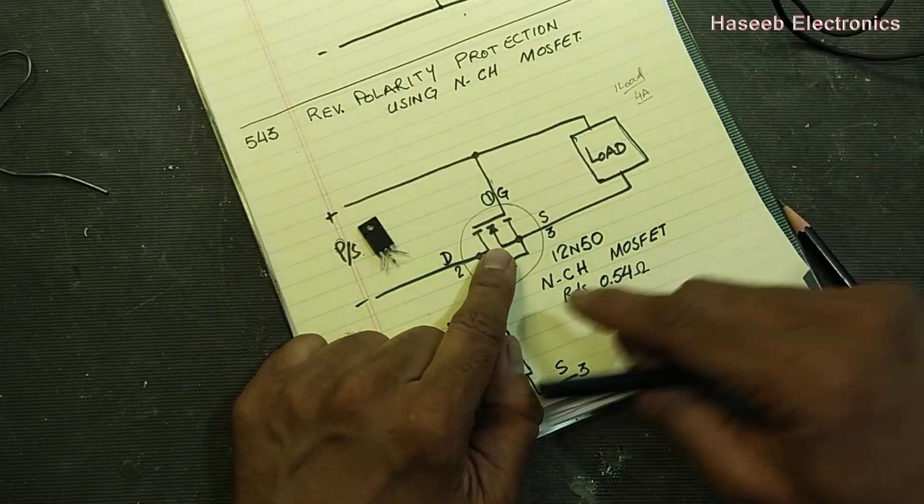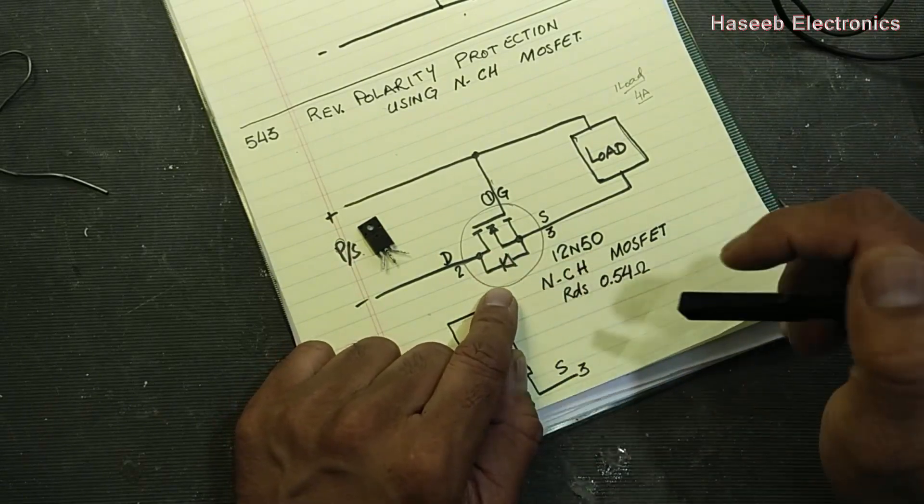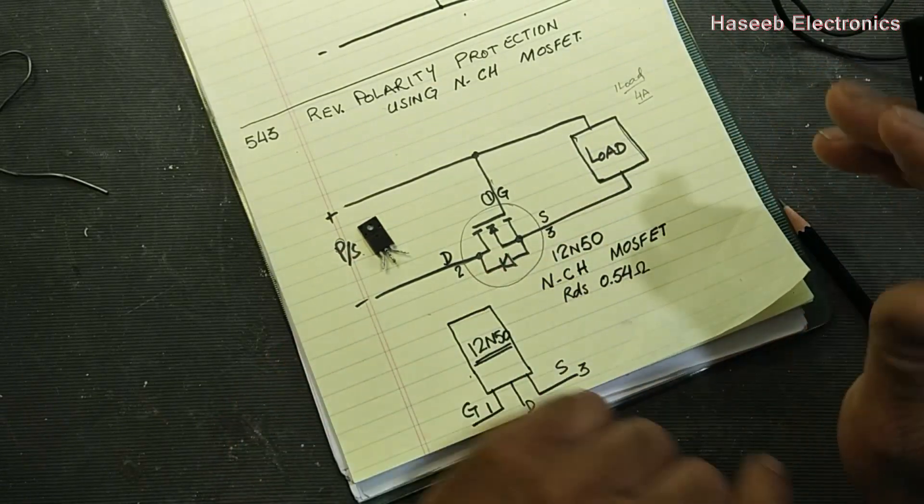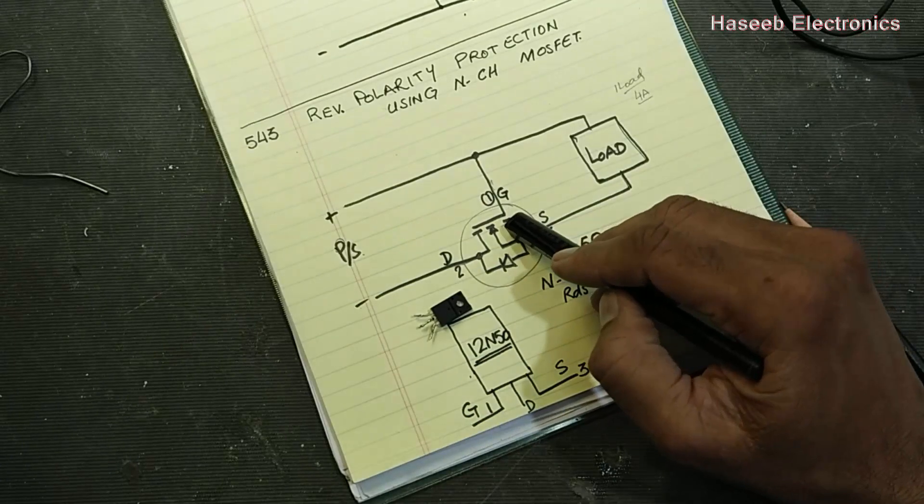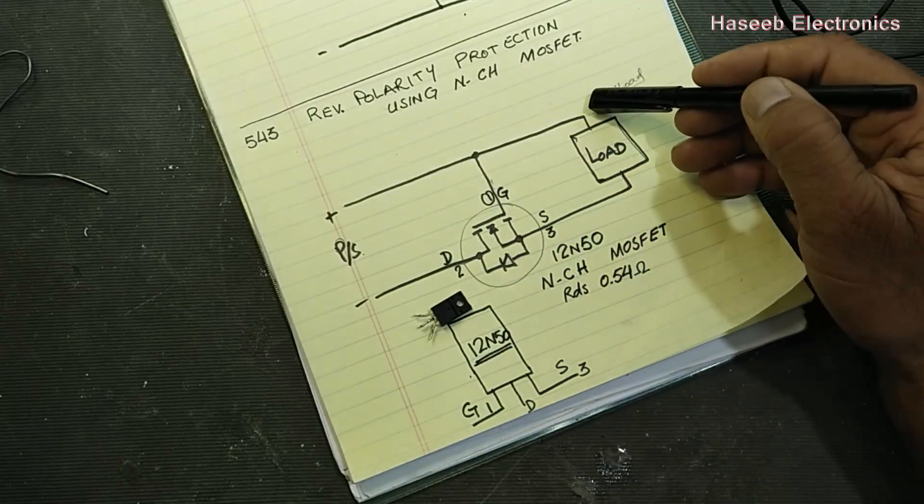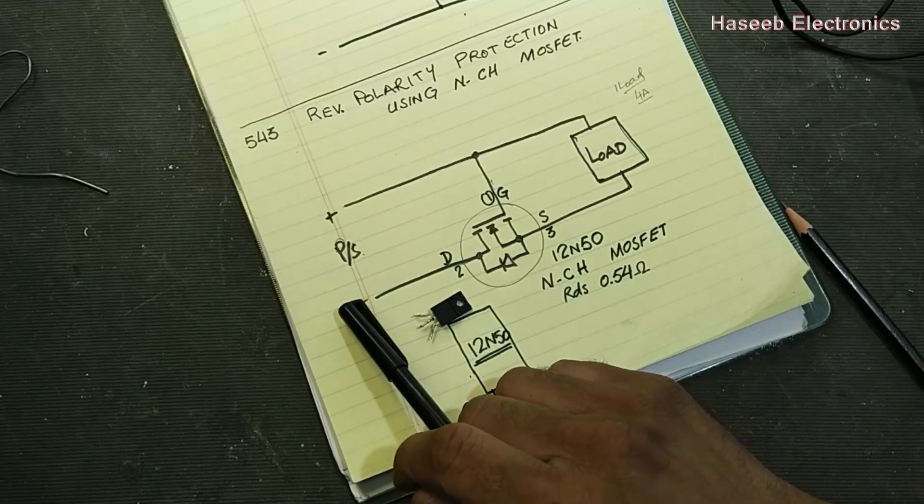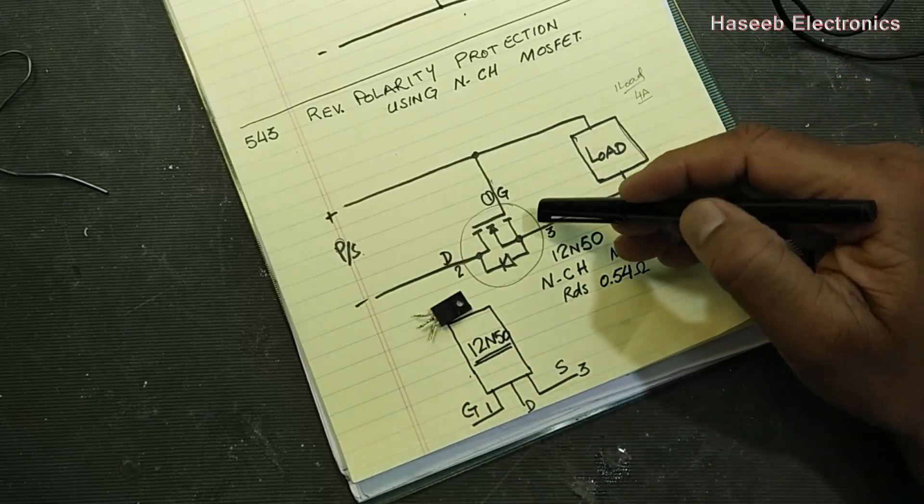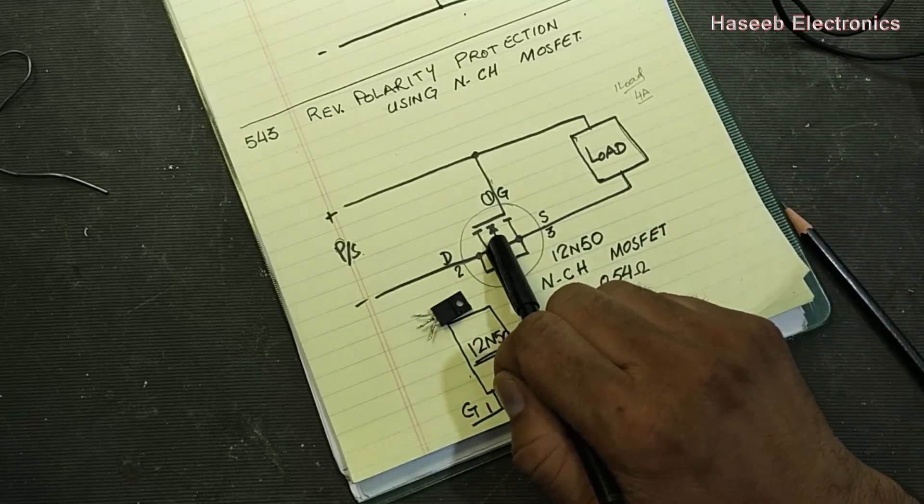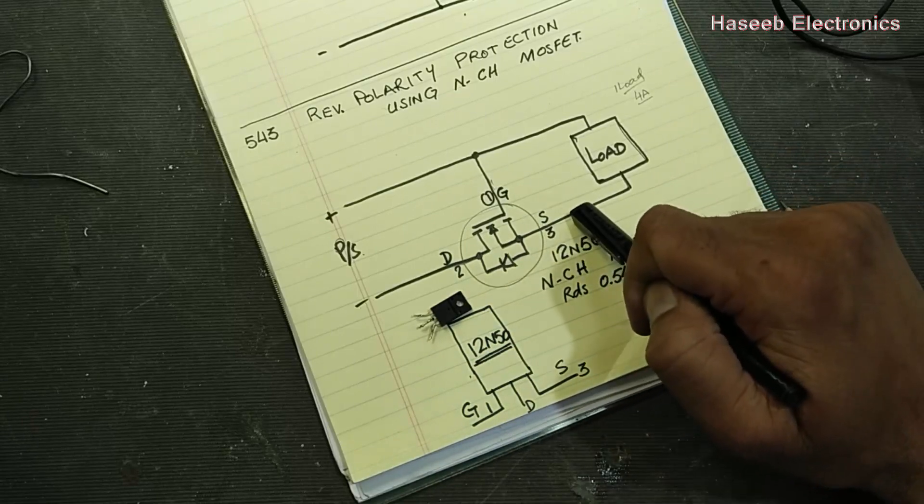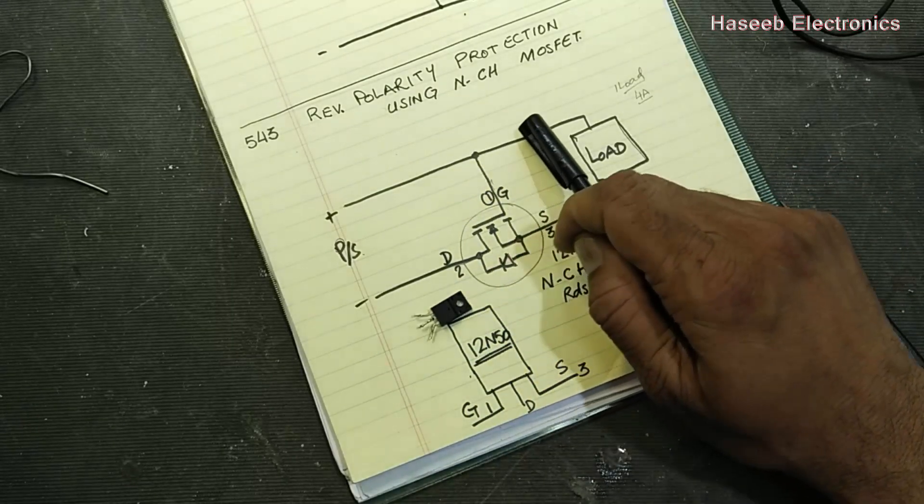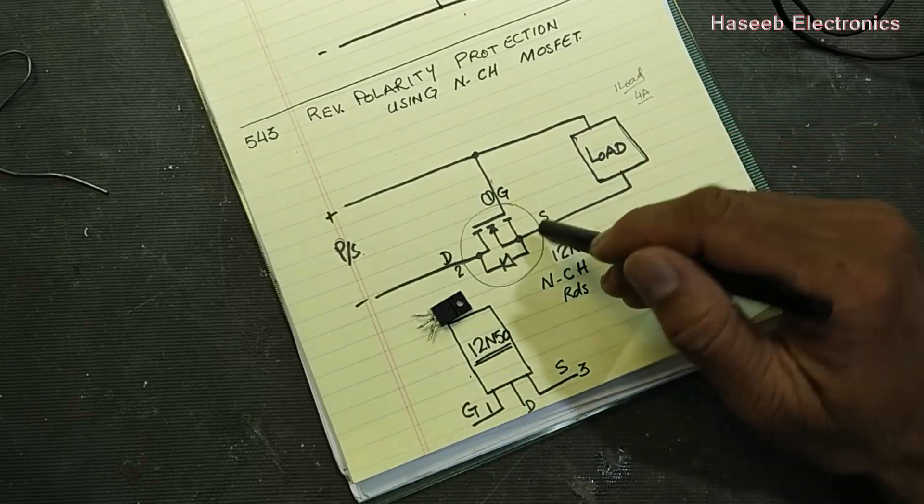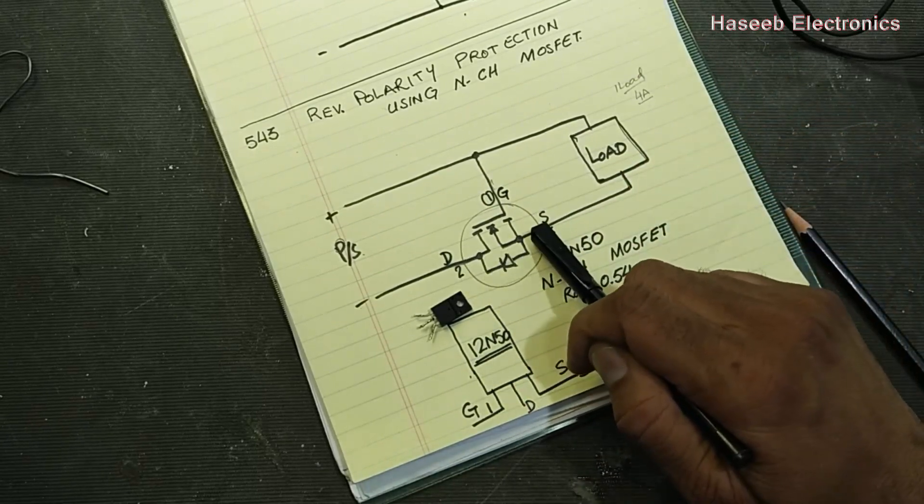But this MOSFET does not drop too much, it drops in millivolts. Gate is connected to positive line, and we apply negative line to the drain, and we take the switched negative voltage from pin number 3. Positive is supplied directly to the load and negative is controlled by this MOSFET.